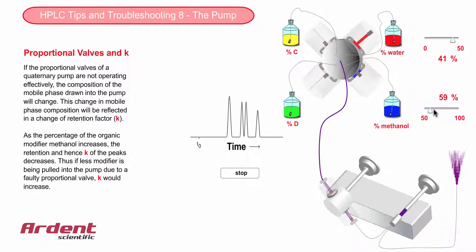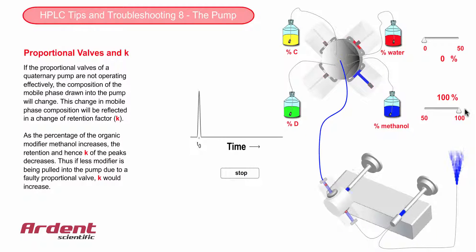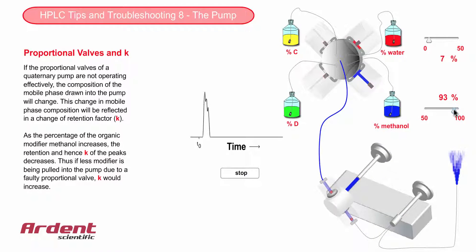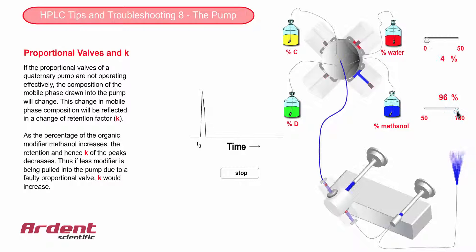If channel A, which contains the aqueous mobile phase, is leaking, this will result in relatively more organic modifier from channel B, and the retention factor will decrease as a result of this.